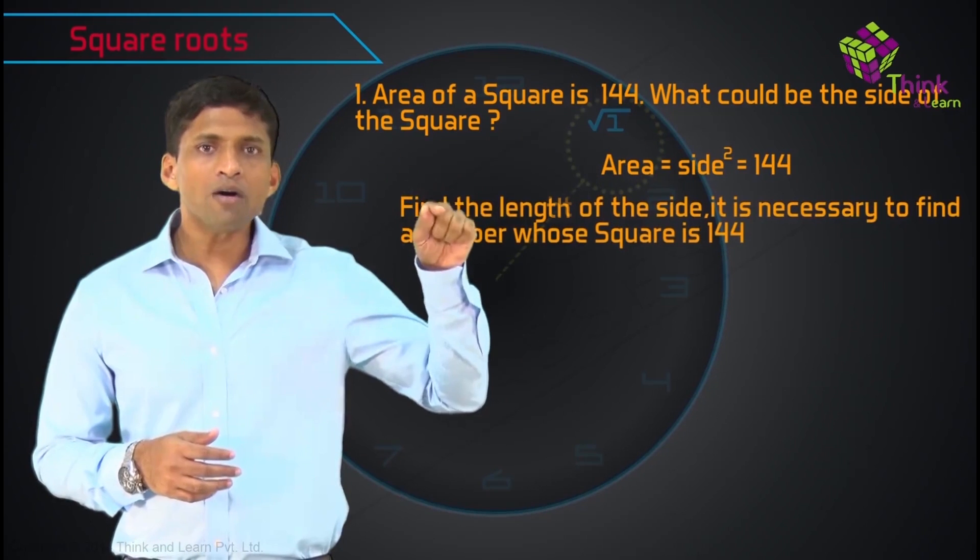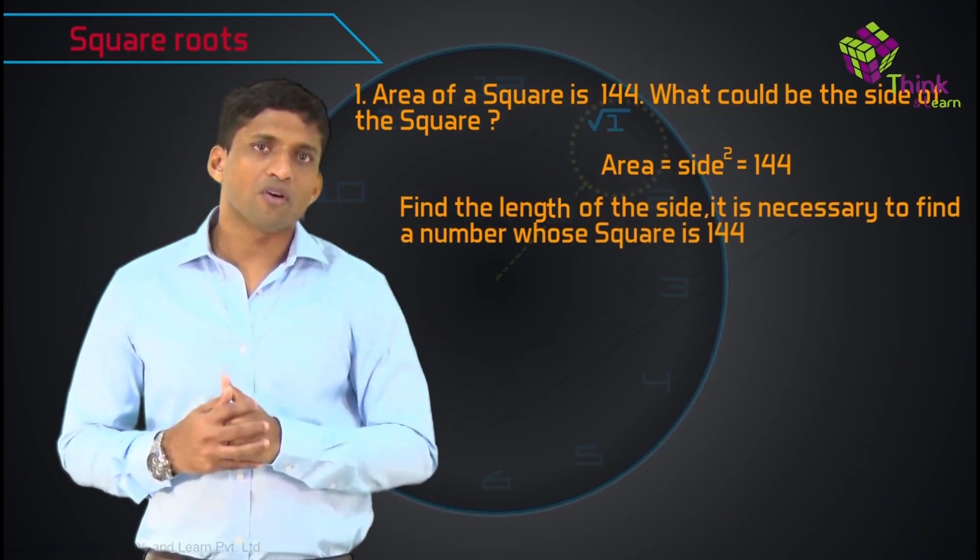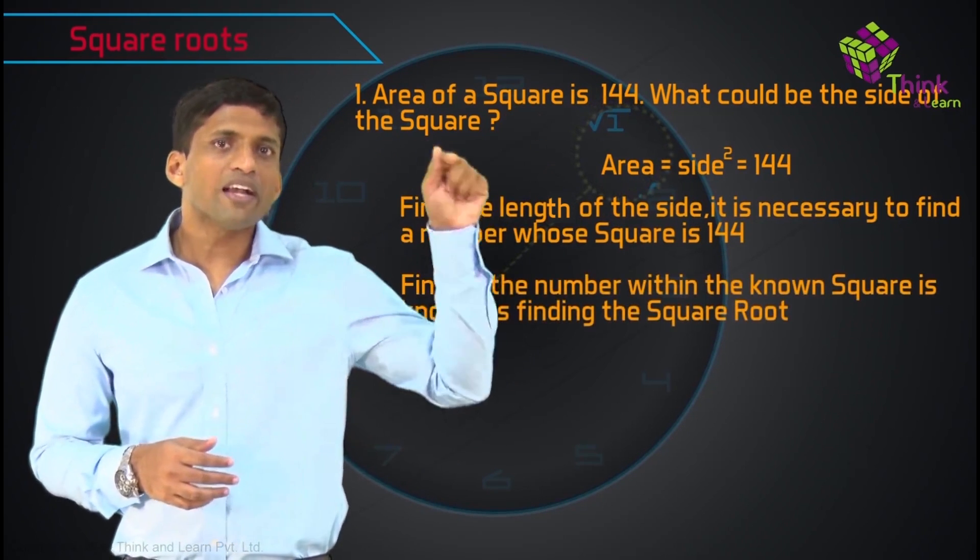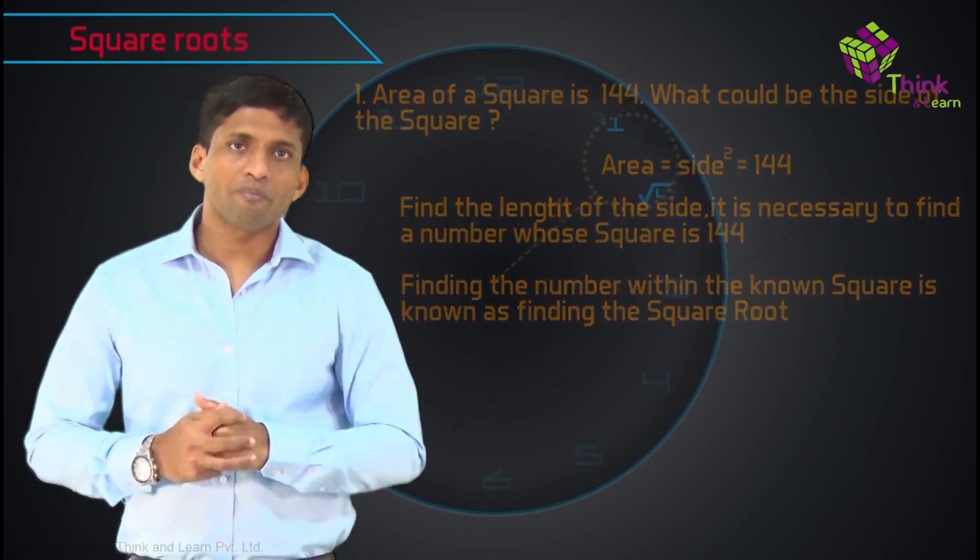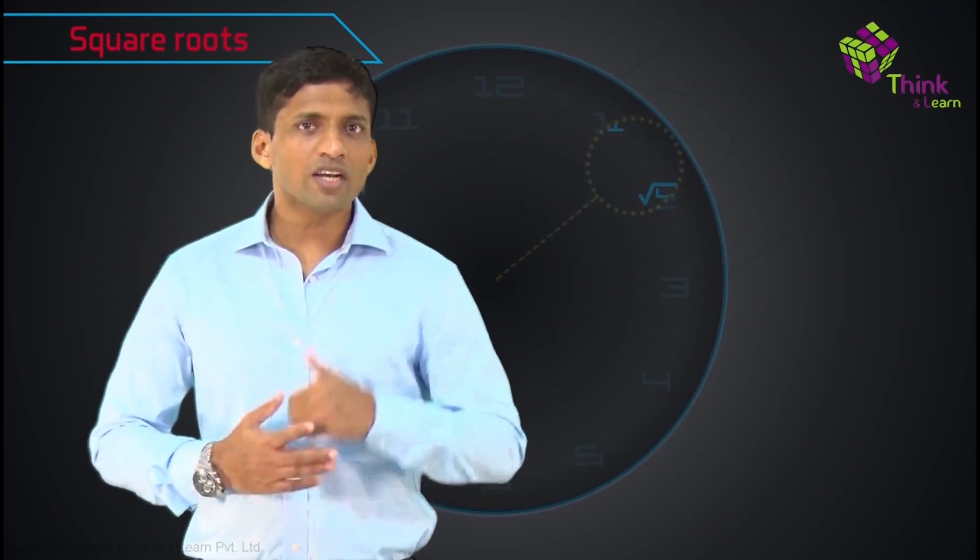Finding the side here is equivalent of, we need to find a number whose square is 144. And that number which we are trying to find out here is called the square root of 144. That is in simple language, rather than complicating it.